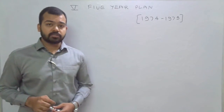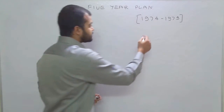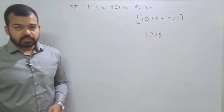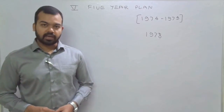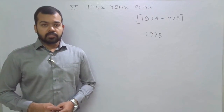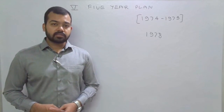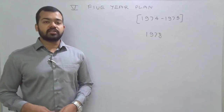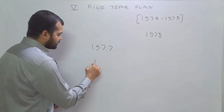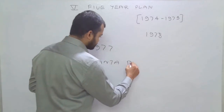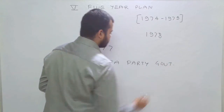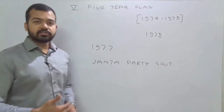One important thing to note is that this plan was discontinued in the year 1978. The main cause of discontinuation was the election lost by the then Prime Minister Indira Gandhi. The Congress led by Mrs. Indira Gandhi lost the election in 1977, and the new Janata Party government came into power and discontinued the planning process.